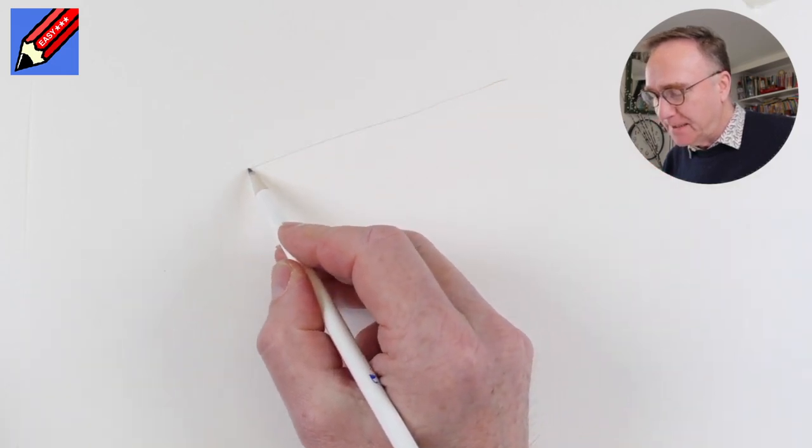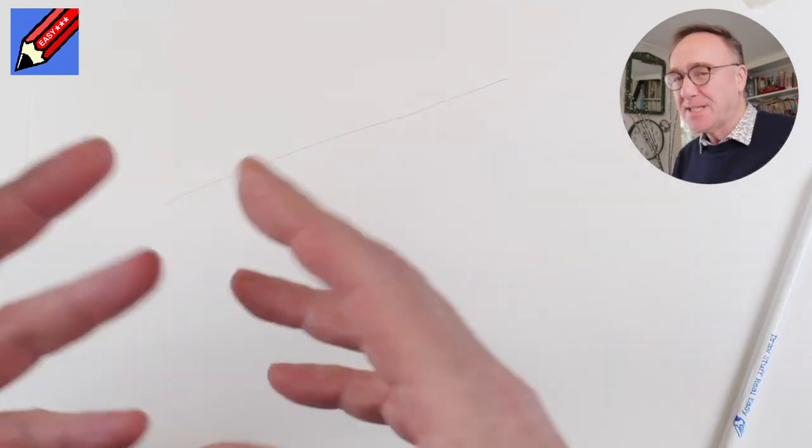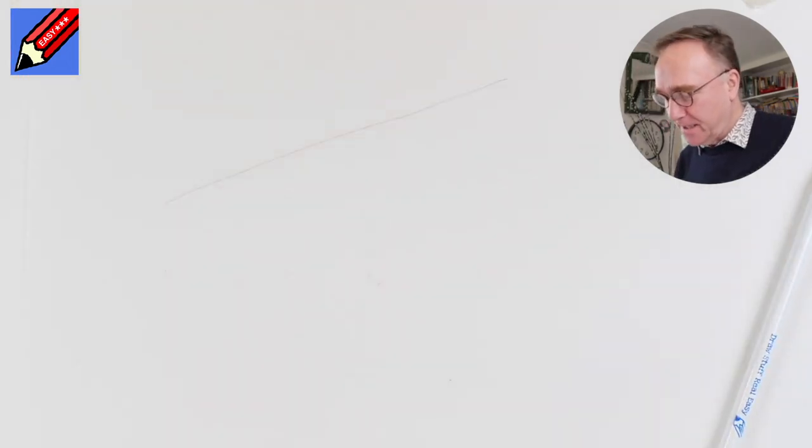So I'm going to start by drawing a line like that. Imagine that's the edge of a table or something and it's going to drip over the side.